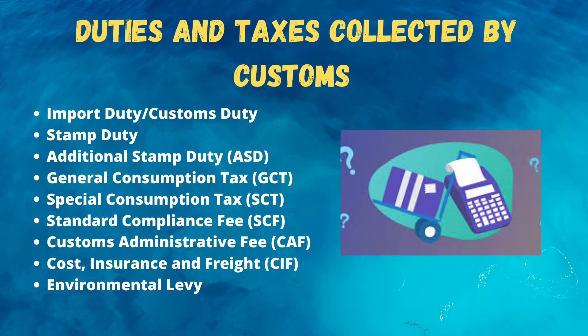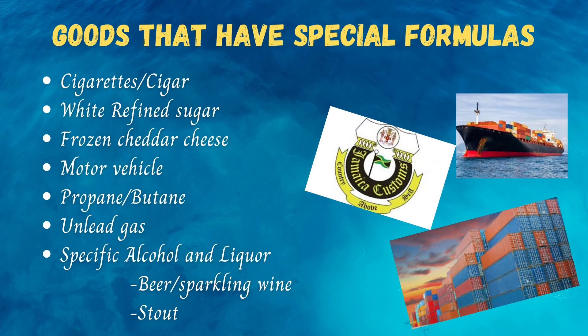When calculating customs duties, there are special goods that require special formulas. We have cigarettes or cigars, white refined sugar, frozen cheddar cheese, motor vehicles, propane and butane, unleaded gas, specific alcohols and liquors such as beer, sparkling wine and stout.